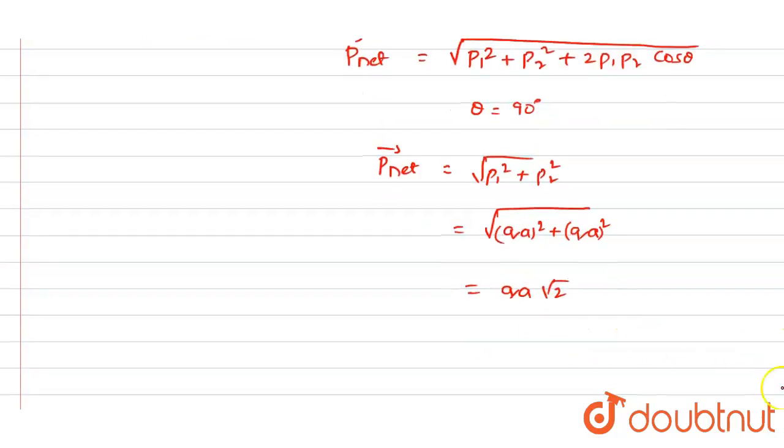This is the value of the P_net vector we have got as qa√2. We can also write this as P√2.